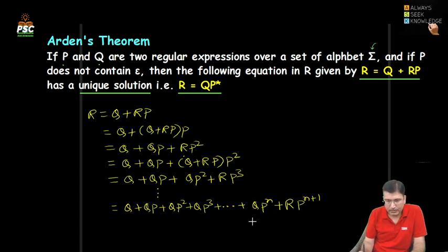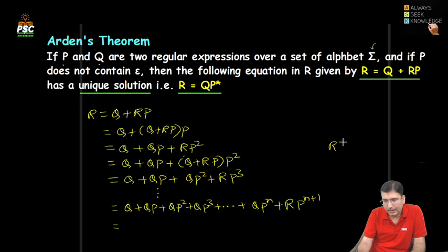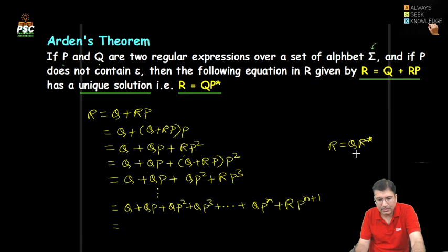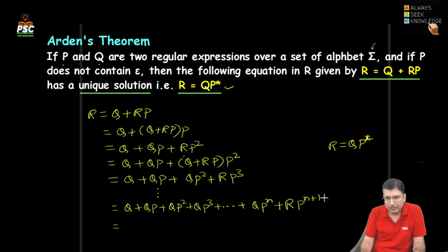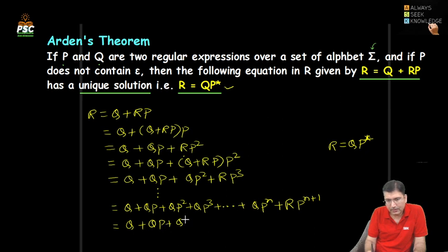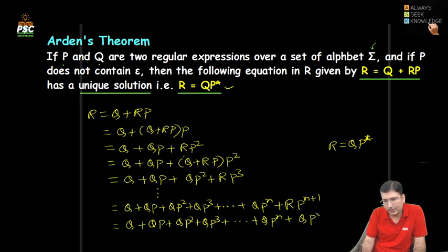Now, Arden's says that R has the unique solution QP*. So let us replace this R in the last term with QP*. That gives us Q + QP + QP² + QP³ + ... + QP^N + QP* · P^(N+1).